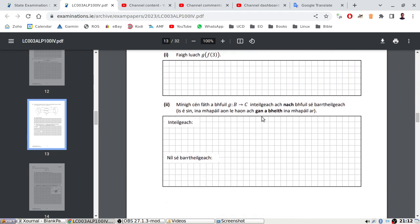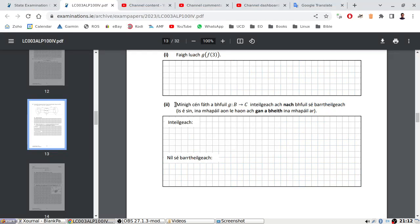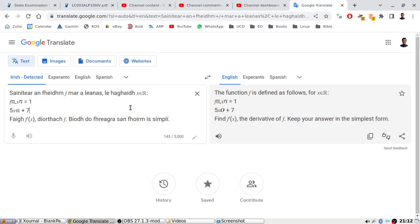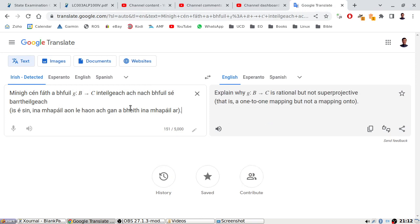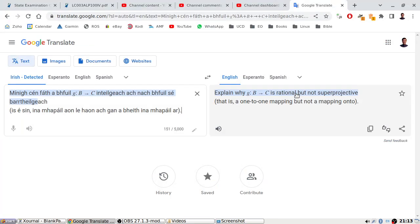So this is asking me the reason why or why not map B to C. I'm not sure, is it a function or bijective, injective? I'd need to translate for sure. Explain why B to C is rational but not super projective, that is a one-to-one mapping but not a mapping onto. B to C.